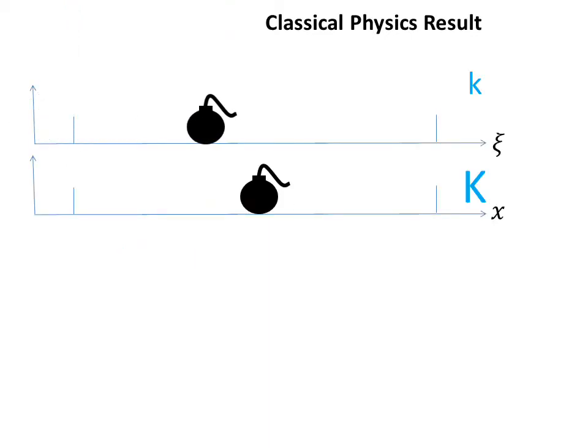Observers in the moving system k, using classical physics through its Galilean transformations, conclude there was no explosion in stationary system K if the arrival of rays at the trigger were to be the criterion. Therefore, if we were to use the arrival at a trigger of simultaneously emitted light rays, then it is exactly classical physics that will sustain relativity of simultaneity. As seen, it is classical physics that concludes that simultaneously arriving rays of light in K are seen as non-simultaneously arriving rays of light in k.